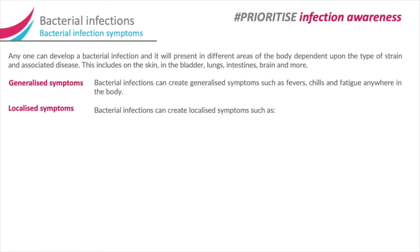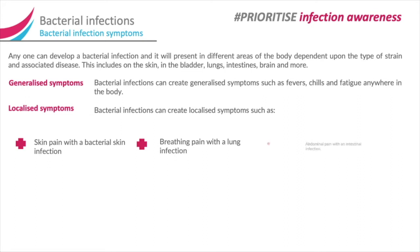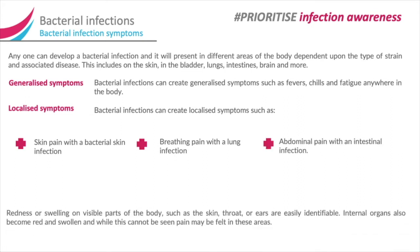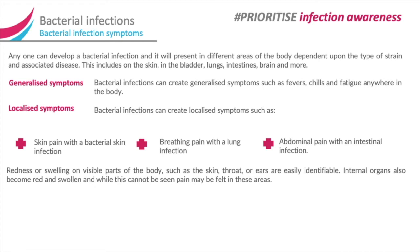Localised symptoms. Bacterial infections can create localised symptoms such as skin pain with a bacterial skin infection, breathing pain with a lung infection, and abdominal pain with an intestinal infection. Redness or swelling on visible parts of the body such as the skin, throat or ears are easily identifiable. Internal organs also become red and swollen and, while this cannot be seen, pain may be felt in these areas.